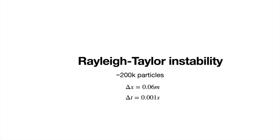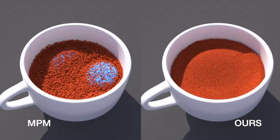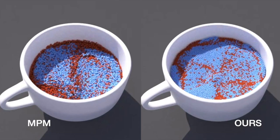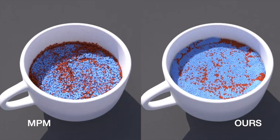We simulate Riley-Taylor instability by initializing two layers of fluid with different density. Our method shows a uniform particle distribution and maintains the fluid volume.